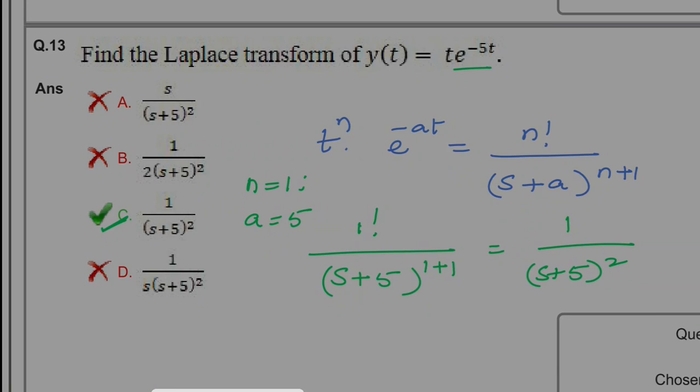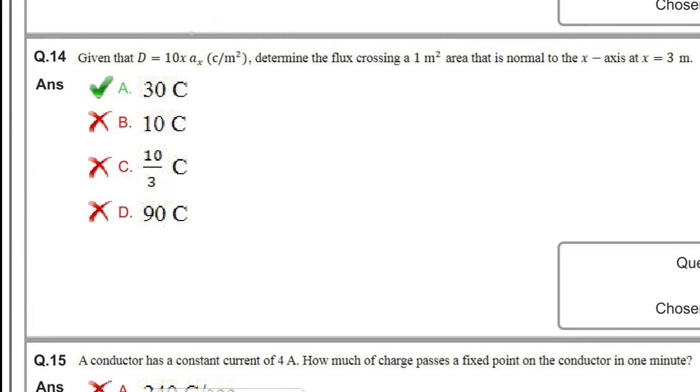Next question: given that D = 10x ax coulombs per meter squared, determine the flux crossing 1 m² area that is normal to the x-axis at x = 3 meters. What we need to find here is flux, which is nothing but charge.